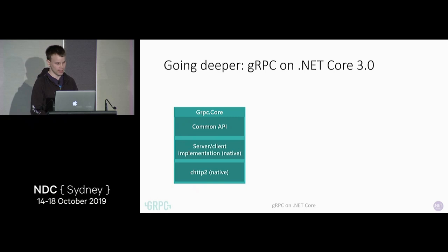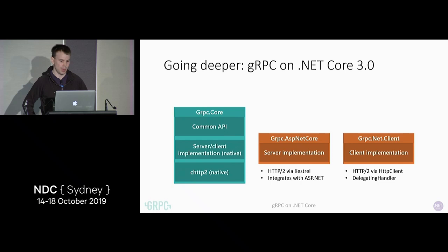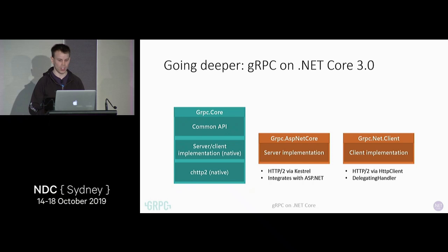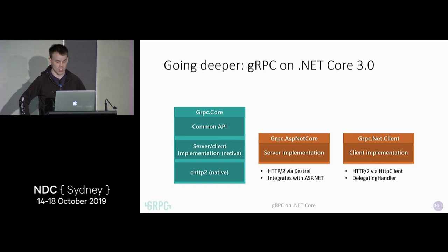So what have we introduced in .NET Core 3? We've got gRPC ASP.NET Core — that's our server implementation. It sits on top of Kestrel and uses Kestrel for its HTTP/2 stack, and it integrates with ASP.NET Core. So like I said — dependency injection, routing, configuration, authentication, authorization — all of that stuff you can just reuse with ASP.NET Core. And you can use it side by side with other technologies, so you can have an MVC app alongside a gRPC app, maybe on the same port, maybe on different ports.